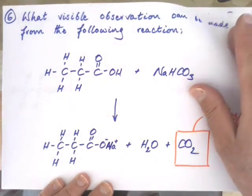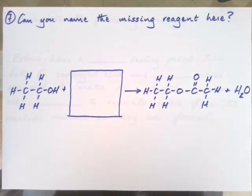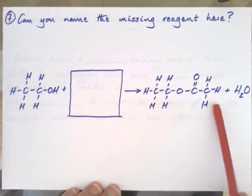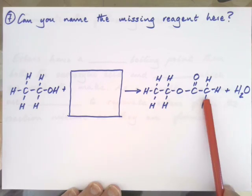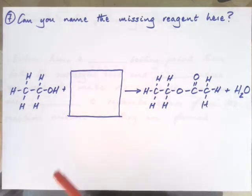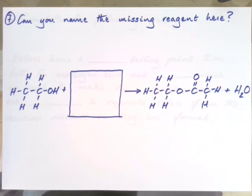Question number seven. Can you name the missing reagent here? We've got another esterification — the product is ethyl ethanoate, and it's formed from ethanol and something else. Can you pause the video, check out the ester section on your poster, and think about what that missing reagent might be?